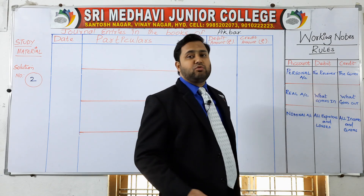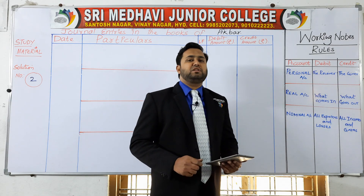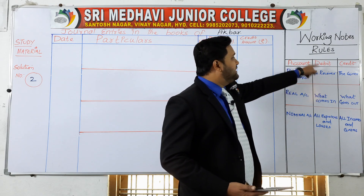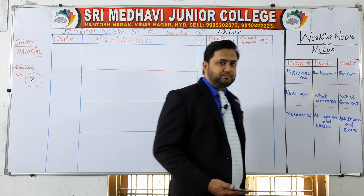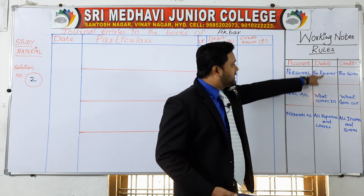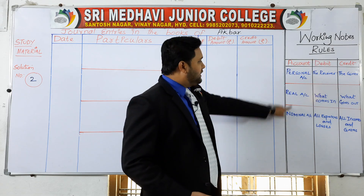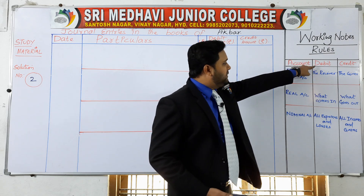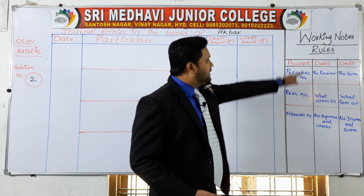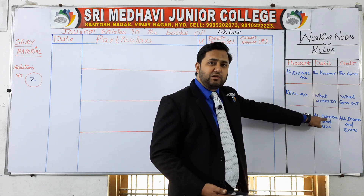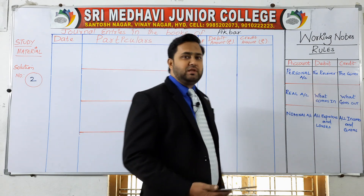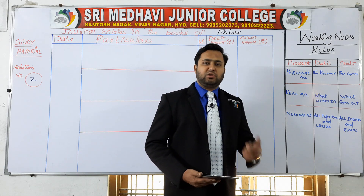I'll repeat the rules so that you can better understand journal entries while solving the problem. Personal account: debit the receiver, credit the giver. Real account: debit what comes in, credit what goes out. Nominal account: debit all expenses and losses, credit all incomes and gains. You have to follow these rules while writing journal entries.